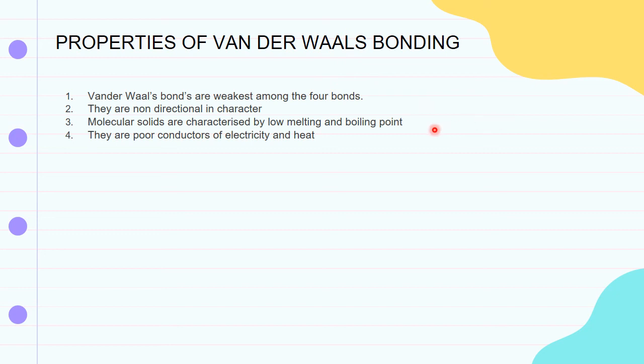In inert atoms, the outermost shells are completely filled, so there are no free electrons or conduction electrons. This is why they are poor conductors of electricity. I hope you all understand today's class. We will see you in the next class. Thank you for listening.